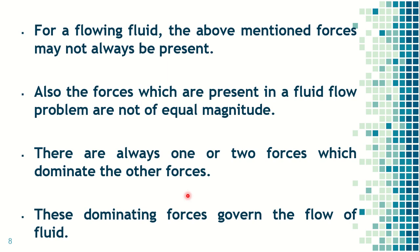These six types of forces help us in the calculation of dimensionless numbers. In dimensionless numbers, we keep the inertia force constant and divide each of the other five forces by the inertia force, giving us five dimensionless numbers. These dimensionless numbers will be further developed into model laws, which we will discuss in upcoming videos.